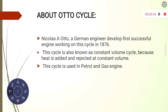Now let's talk about the Otto cycle. Nicholas Otto, a German engineer, developed a successful engine working on this cycle in 1876. This cycle is also known as the constant volume cycle because heat is added and rejected at constant volume. This cycle is used in petrol and gas engines.